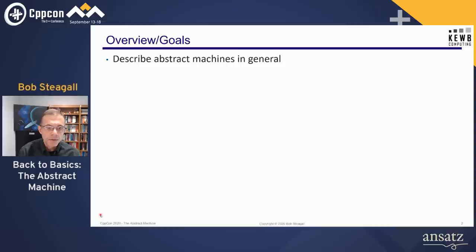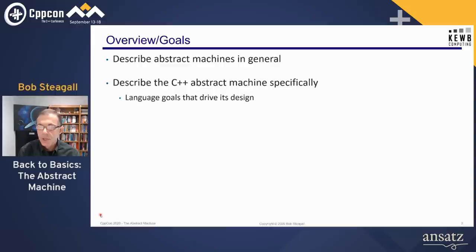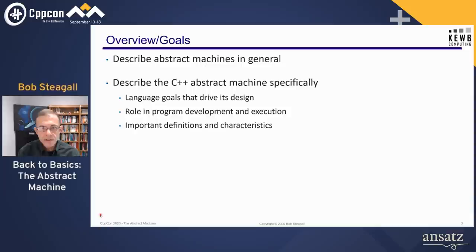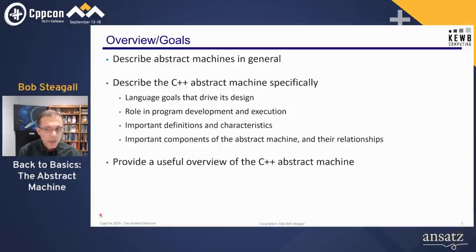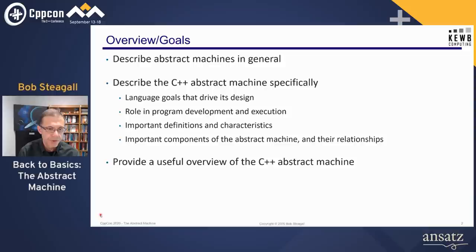I'd like to begin by providing a basic idea of what an abstract machine is in general, then move on to describing the C++ abstract machine in particular. I'll briefly cover some of the language goals that drive the design of the abstract machine and its role in our program development and execution. I'll provide some important definitions, and hopefully tease out some interesting characteristics of the abstract machine in somewhat of an axiomatic way — building a picture from the ground up. There's actually very little code in this talk, but there are a number of definitions and diagrams.